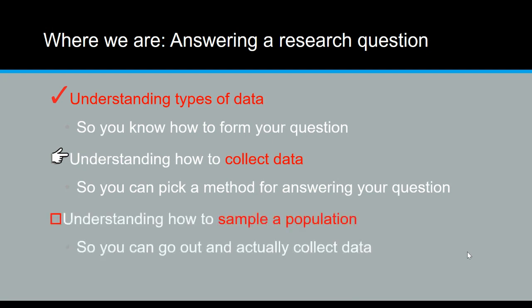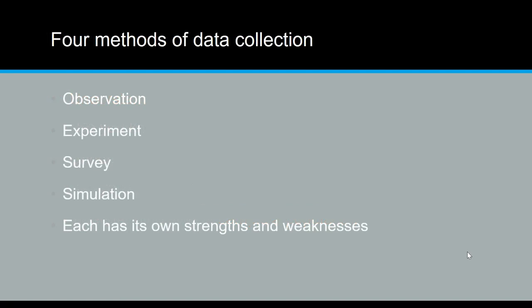In the future we'll also look at how we can actually sample a population. You can see the four different ways we're going to talk about here: observation, experiment, survey, and simulation. The words themselves can be easy ways to help remind you of the differences in them, but we will also discuss their strengths and weaknesses.